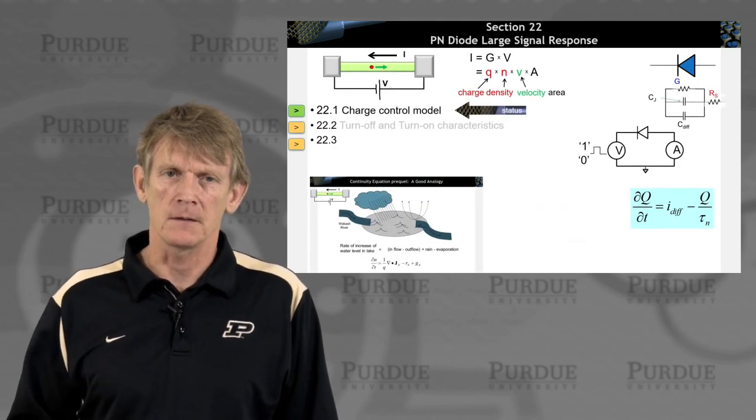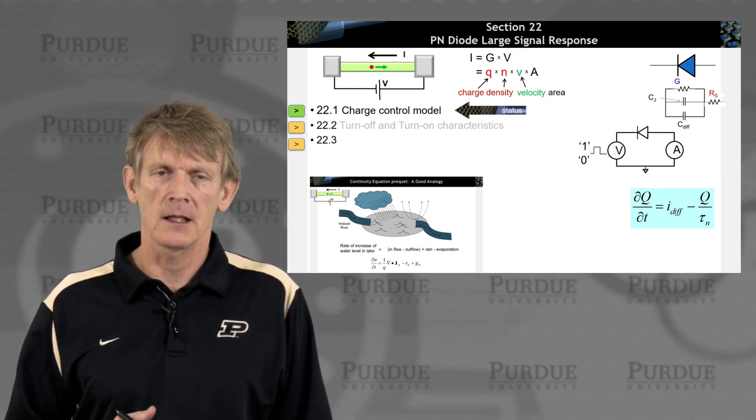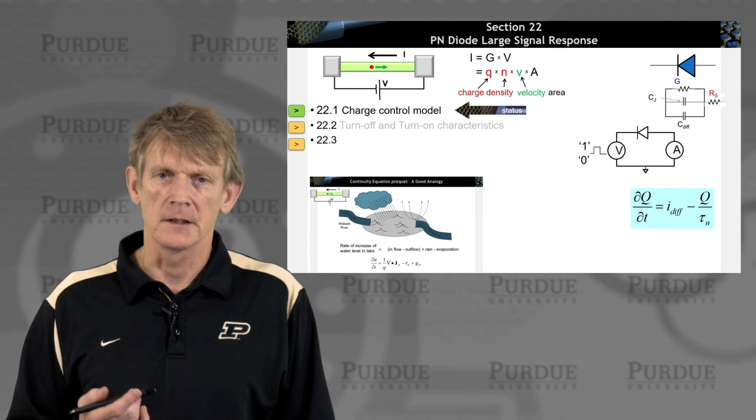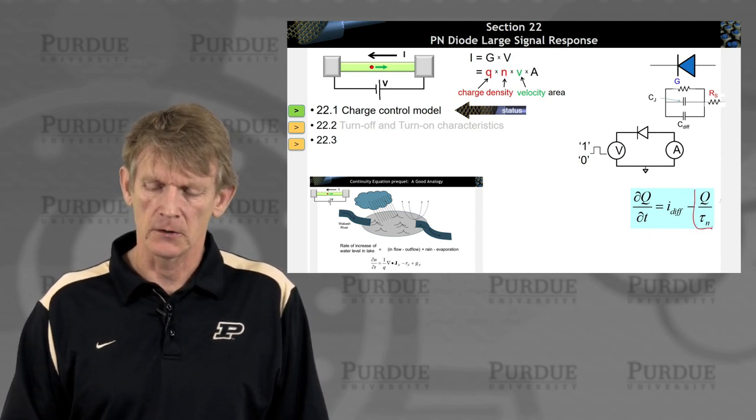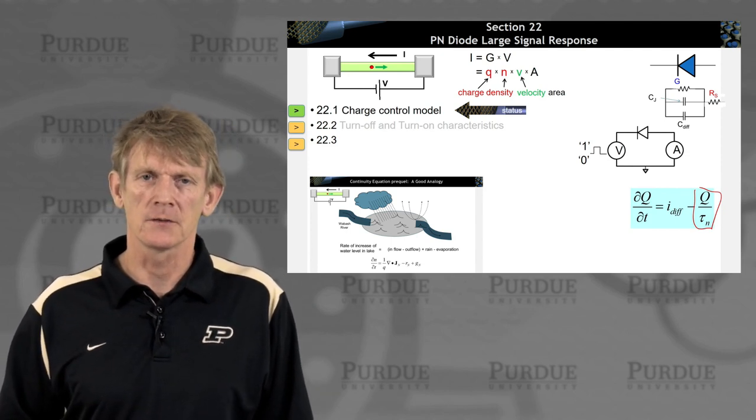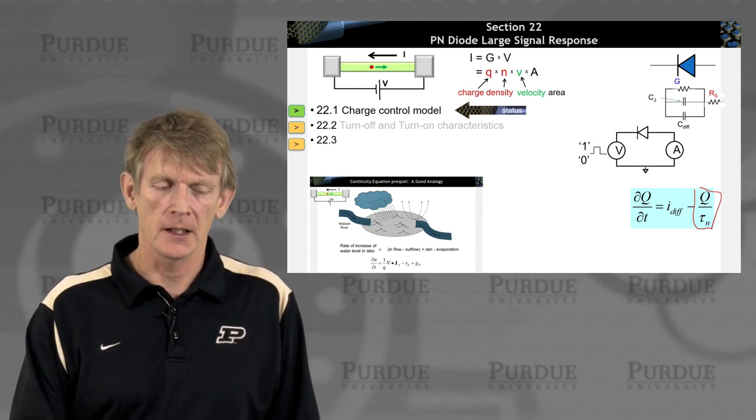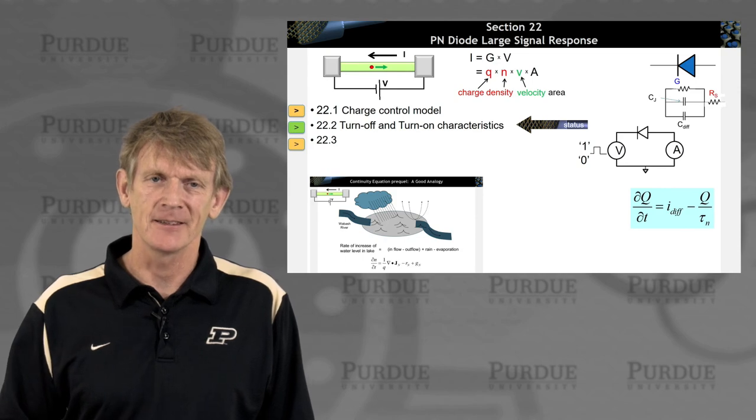So that's the charge control model. It's really, in a way, the classical analog of water in the system. So it's very similar, except you have something called recombination. You can find the equivalent classical model for water as well. Now we're going to look at turning the devices off and on, and derive some expression for it. I'll do that in the next section. See you then.